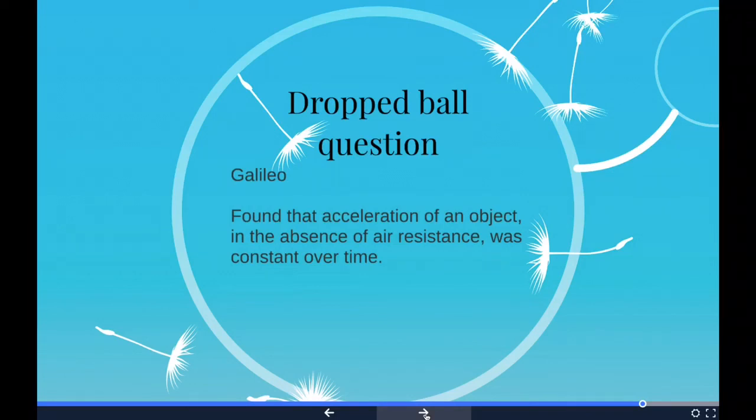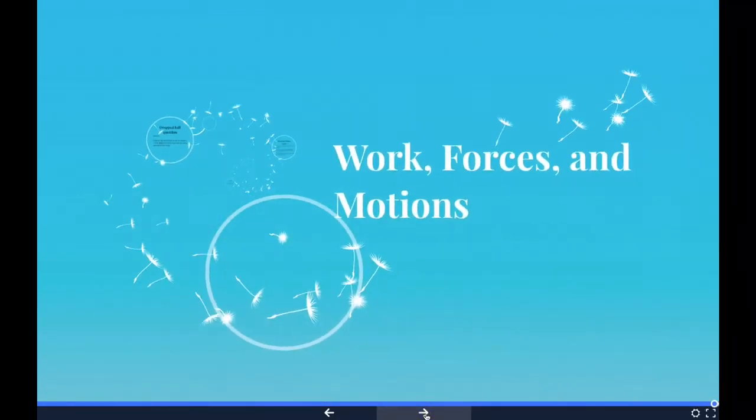Therefore, a bowling ball and tennis ball would both reach the ground at the same moment in the absence of air resistance. Both should reach the ground at the same time regardless of their shape. All objects near the surface of the earth fall with the same acceleration, which is 9.8 meters per second squared. So that is a number you would like to know, 9.8 meters per second squared.